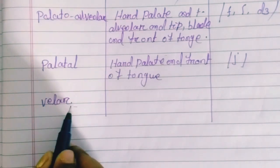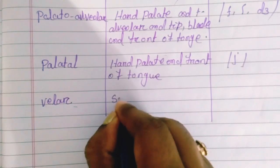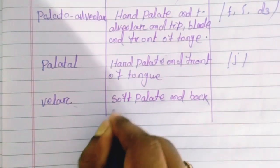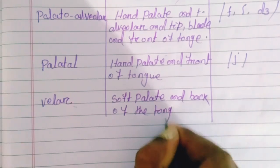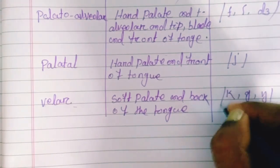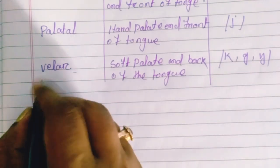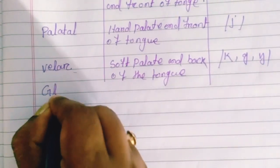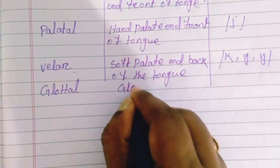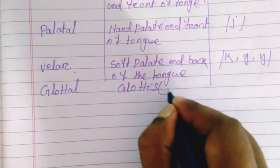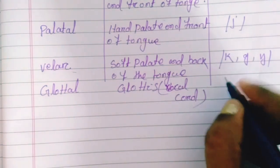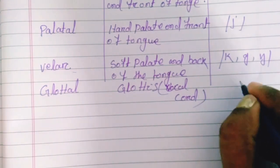During the production of velar consonant sounds, the articulators are the soft velum and back of the tongue. The examples of velar sounds are the /g/ sound, /k/ sound, and /ŋ/ sound. The last one is glottal — the articulator in glottal sound is the glottis, which means the vocal cords. The example of a glottal sound is the /h/ sound.